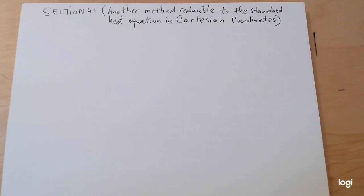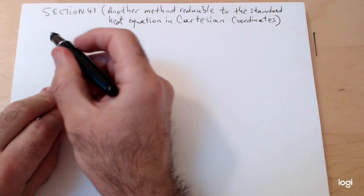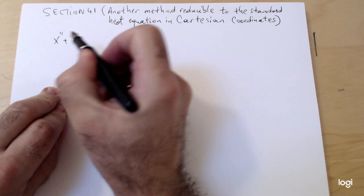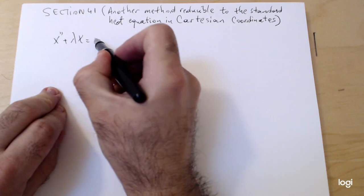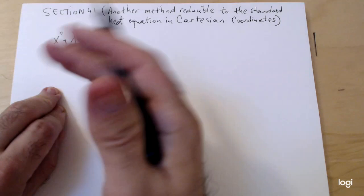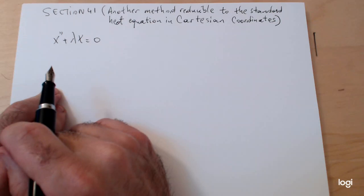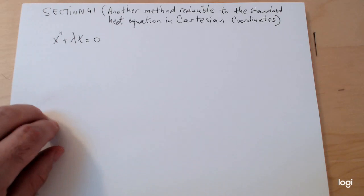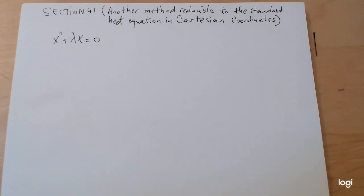If you remember, up until this point our Sturm-Liouville problems, our eigenvalue problems, were of the form x double prime plus lambda x equals zero with various boundary conditions, and then the eigenvalues typically involved sine and cosine functions—the eigenfunctions, sorry.